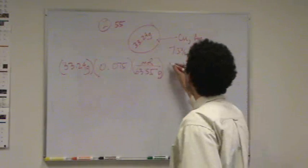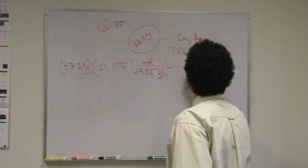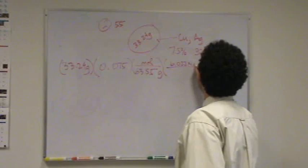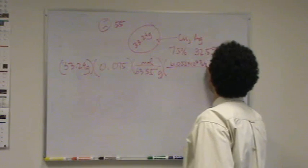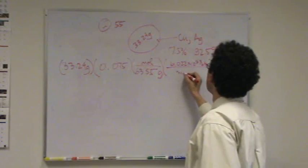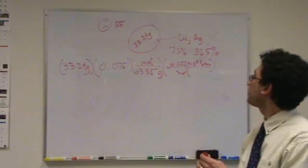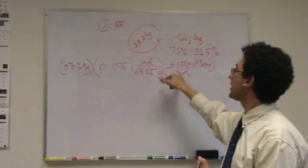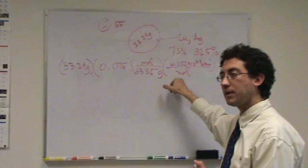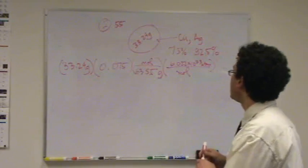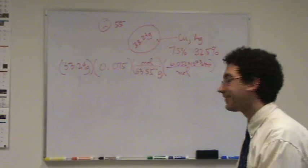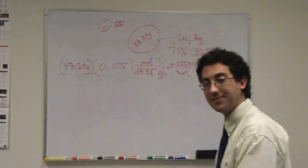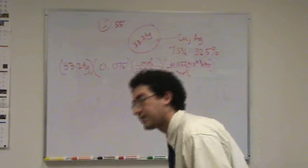Now I need to go to atoms. I must use Avogadro's number. I put the 6.022 on top because I want atoms and I want to get rid of moles. So then, oh, there we go. I guess I'm done. I'll let you do the calculation at home. Thank you.